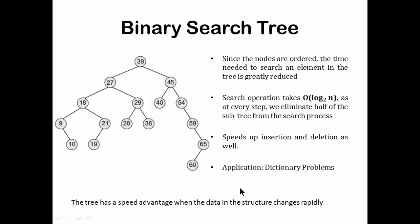If you perform an in-order traversal of a binary search tree, the result follows L, N, R. You go to the leftmost child — there is no left child, so 9 is printed. Then you print 10, then 18, go to the right child, left child 19, so you get 9, 10, 18, 19, 21, 27. You will see that the in-order traversal of a binary search tree gives you a sorted list.